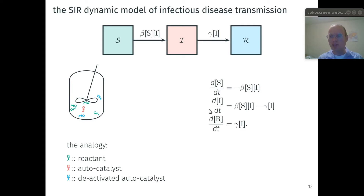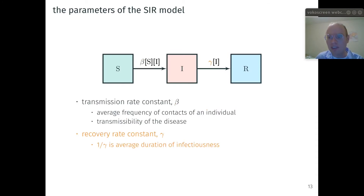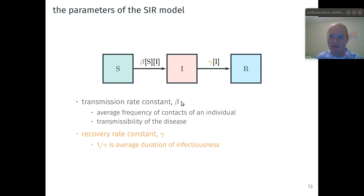The first two differential equations are all you need to specify the dynamics of the SIR model; R then follows from 1 minus S minus I. There are only two parameters in the SIR model. The first is the transmission rate constant beta — the product of the average frequency of contacts of an individual and the transmissibility of the disease, which is the probability of transmission conditioned upon contact. The second parameter is the recovery rate constant gamma, the inverse of which is the average duration of infectiousness. The average duration of infectiousness can be determined from contact tracing or viral shedding studies, while beta can be identified by fitting to case counts as a function of time, much like how we identify reaction rate constants in chemical kinetic models by fitting to concentration time series data.